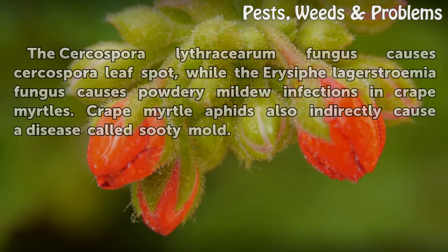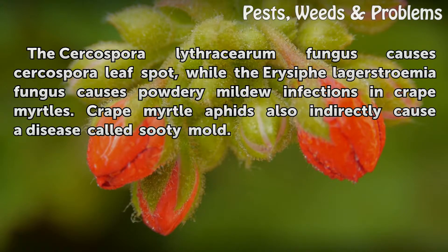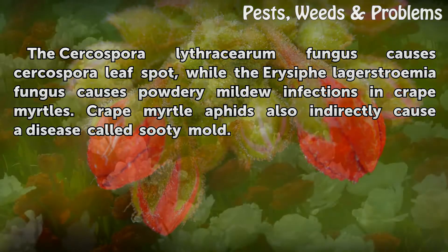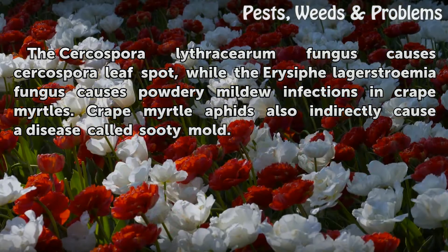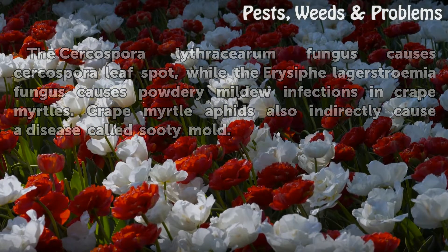Types: The Cercospora leaf spot is caused by the Cercosporalithrasiarum fungus, while the Aracifilograstremia fungus causes powdery mildew infections in Crepe myrtles. Crepe myrtle aphids also indirectly cause a disease called sooty mold.